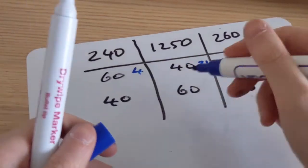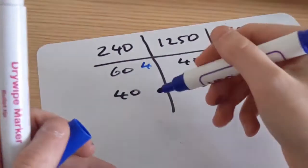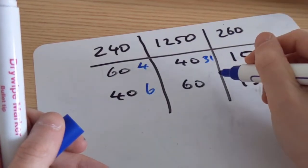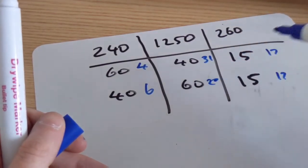I can write 17 there as well because they're both the same. Then do 240 divided by 40 is 6. And then 1250 divided by 60 gives me 20.